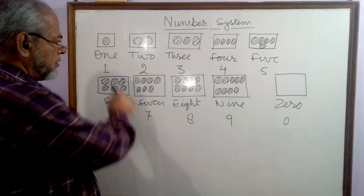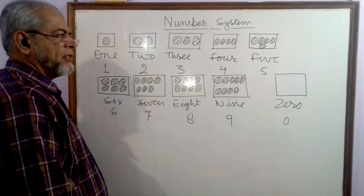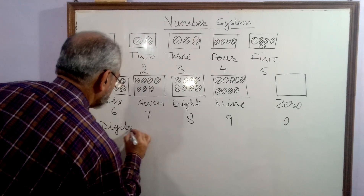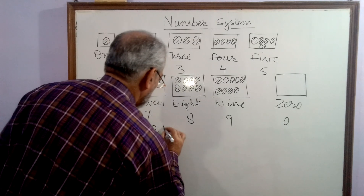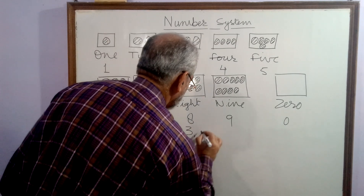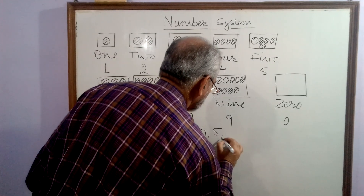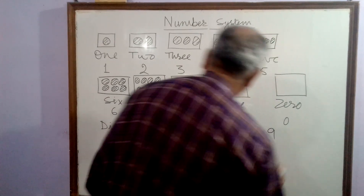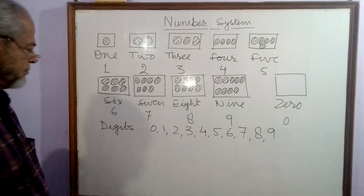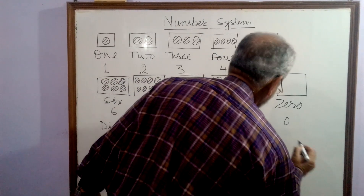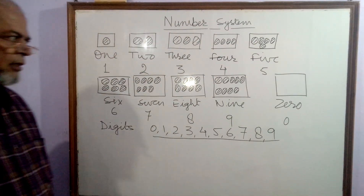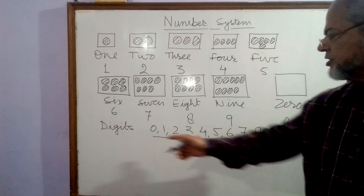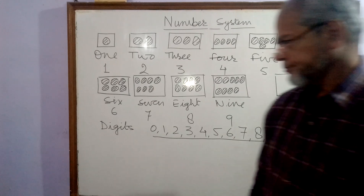All these numbers are called digits. That means zero, one, two, three, four, five, six, seven, eight, and nine — these all are digits. By these digits, we can write any number — any amount can be written using these ten digits.